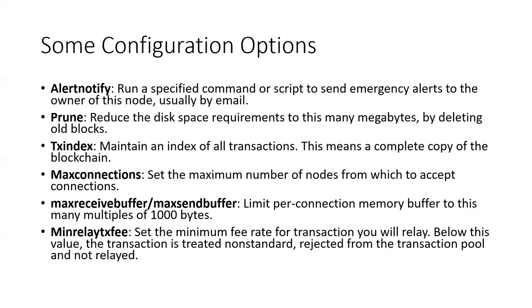There are a lot of configuration options you can use with Bitcoin Core. You can have commands to send alerts to the node owner by email, reduce disk space requirements by deleting old blocks, maintain indexes of transactions, specify the maximum number of nodes to communicate with, limit memory usage, and set minimum fees for transactions when mining. That gives you an idea of some of the configuration options available.